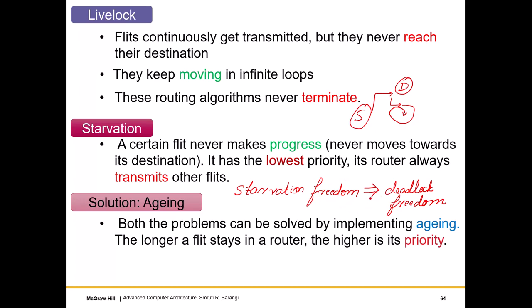The converse is not true: deadlock freedom does not imply starvation freedom. As a counter example, one could take a flit in a router, place it in an auxiliary queue, and delay it forever — that flit suffers starvation, but the rest of the algorithm could still be deadlock-free. So deadlock freedom does not guarantee starvation freedom, but the other direction — no starvation implies no deadlocks — always holds.